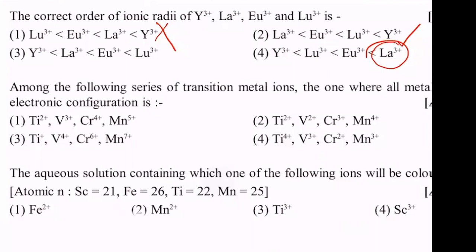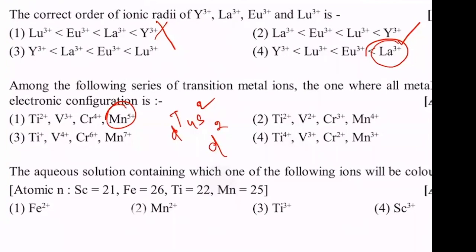For manganese, we have D5 S2. In that case, we have 5 electrons, then 2 electrons — we have D7. Let's check chromium 4+. What is chromium 4+? D2. If you have chromium 4+, with D5 S1, we subtract 4, then we have 2 — D2 configuration. If you have 4+, then we have D2.